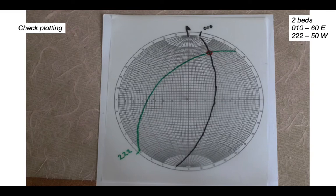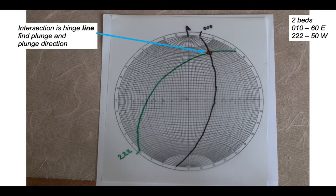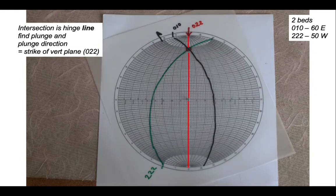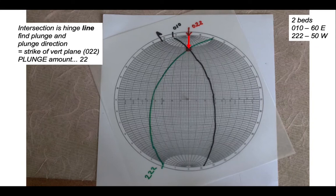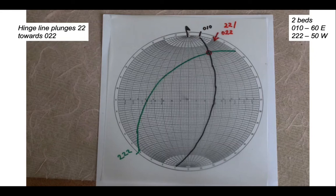Let's check that our plotting is correct. The black line representing our first bedding plane arches round to the eastern side. The green line representing bed 222/50 arches round to the western side. The red circle where the two great circles of bedding cross each other is the hinge line. Lining it up with a vertical great circle, we read off a bearing of about 022 from north, and measuring in from the edge gives a plunge of about 22 degrees. So the hinge line has a plunge of 22 towards a bearing of 022.